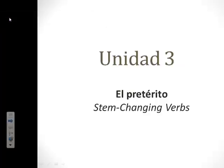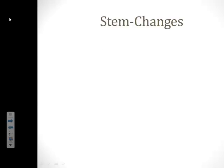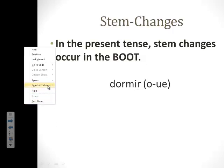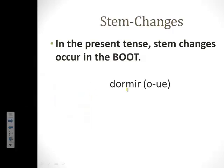Before we start talking about the preterite, let's review stem-changes in the present tense. Like we learned in Spanish 1, in the present tense, stem-changes occur in the boot. So let's take, for example, the verb dormir. Dormir is a stem-changing verb, O to UE, so that means the O is going to change to UE in the boot.